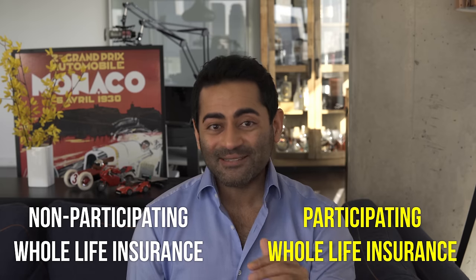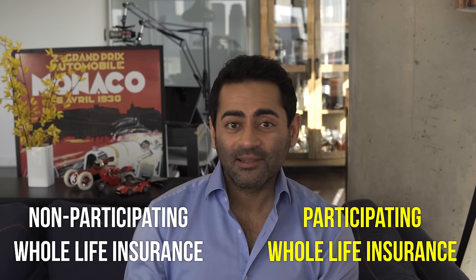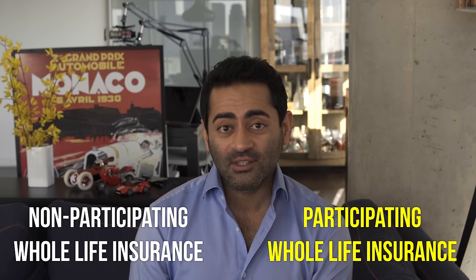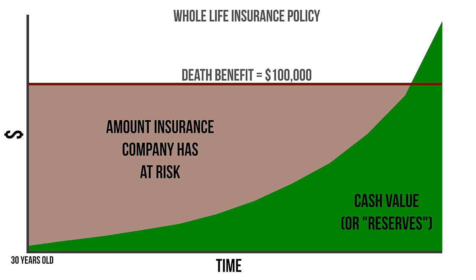But a participating whole life policy is a little different. It gets its name because you participate in the profits of the insurance company with respect to these reserves. So let's say that in year one, fewer people die and make claims than expected, and the reserve fund grows faster than expected due to investment performance. The insurance company will pay out part of these profits to you every year in what's called either a dividend or a bonus, depending on what country you live in.